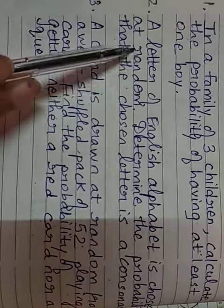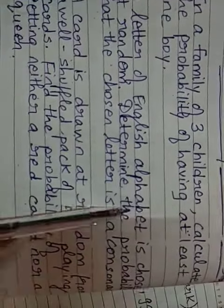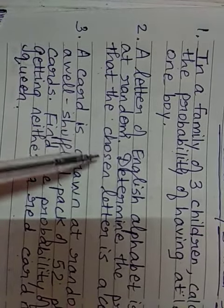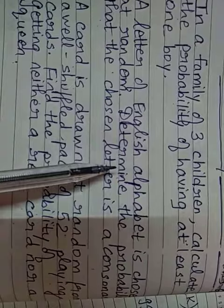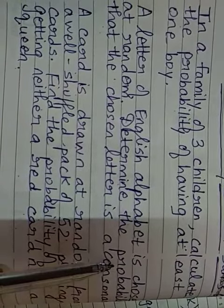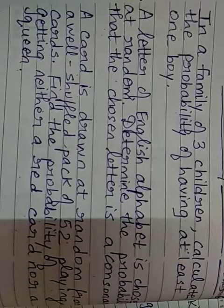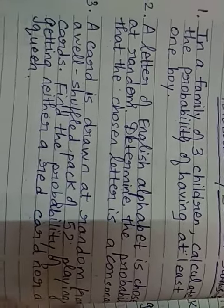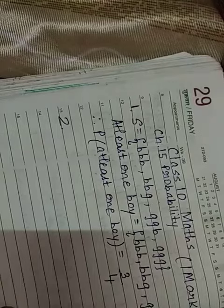See here. A letter of English alphabet is chosen at random. So, total English alphabet is 26. We need to determine the chances, that is the probability that the chosen letter or alphabet is a consonant. Now, we will just see here.